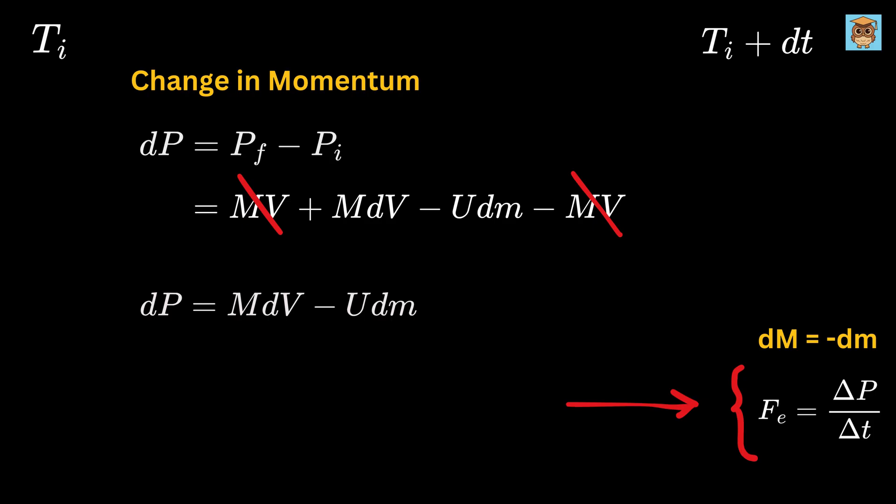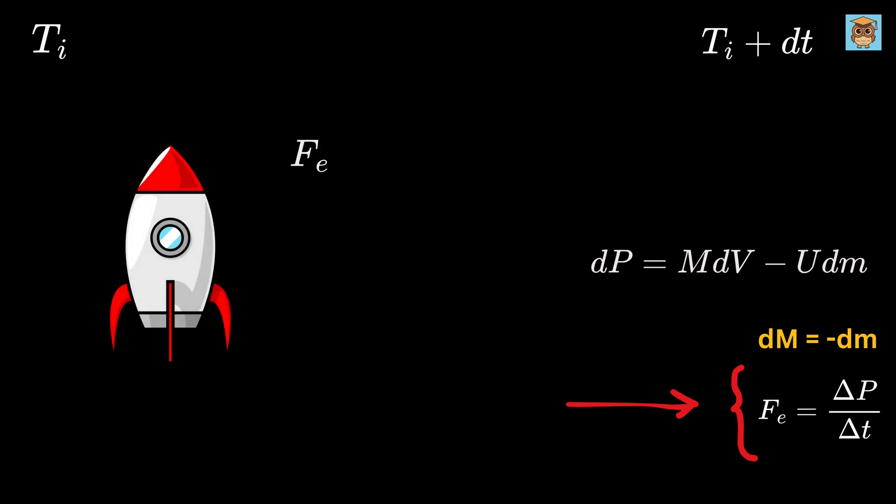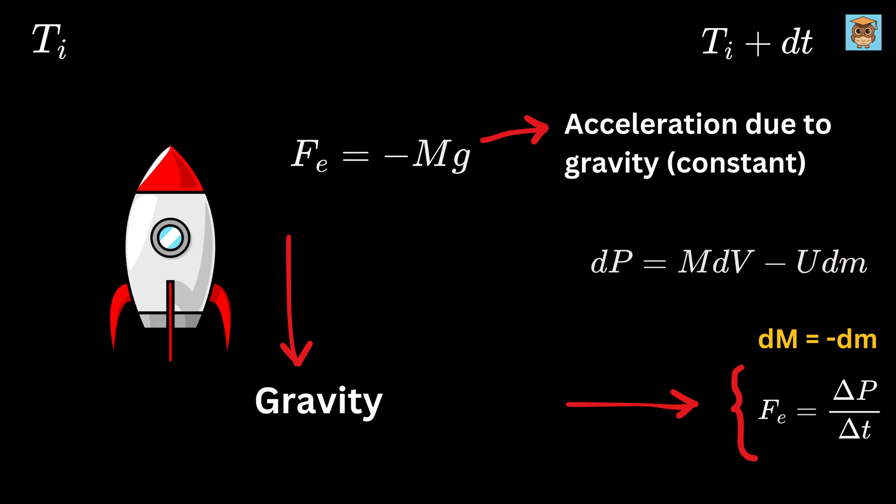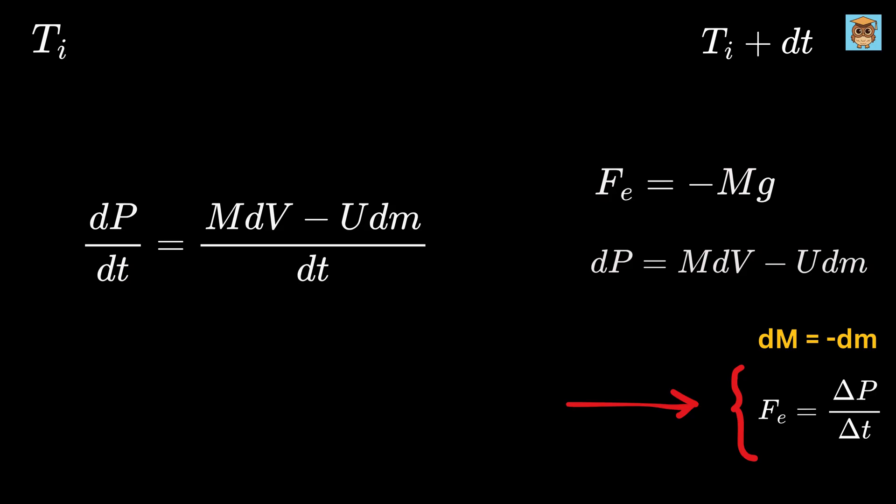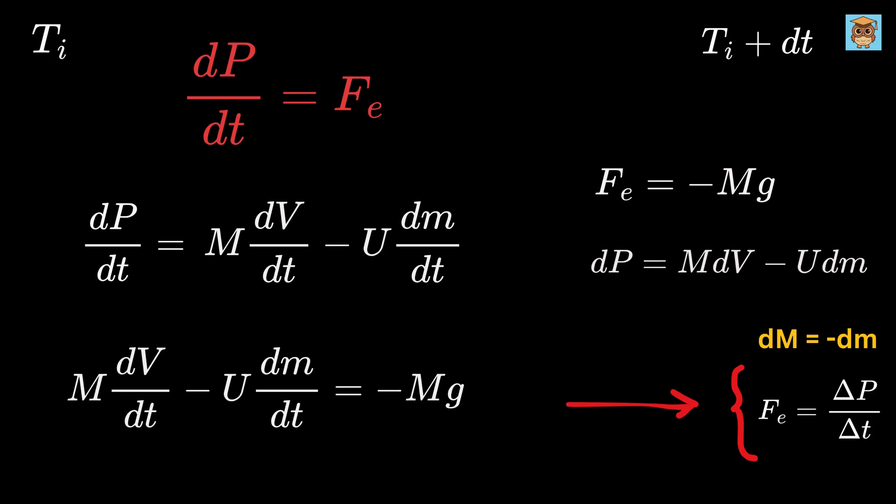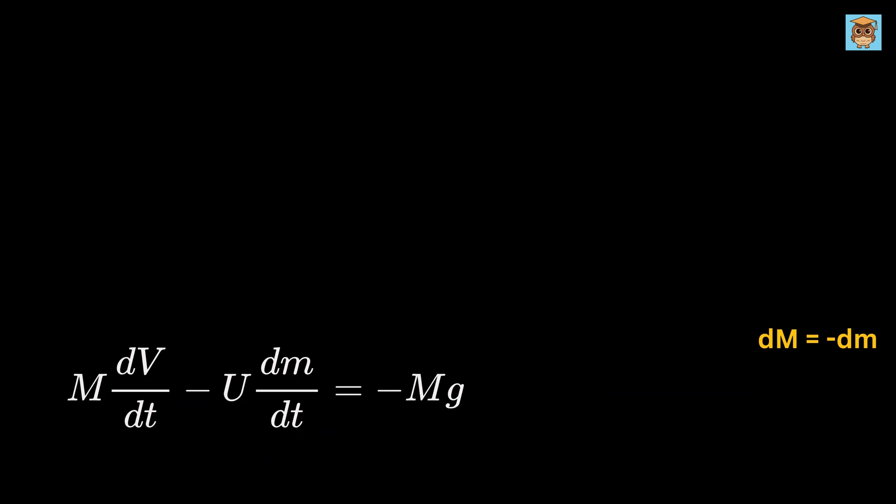Now we have Newton's second law where Fe, the external force applied on the object, equals change in momentum dp divided by change in time dt. What's the external force acting on this rocket? Yeah right, it's gravity. So Fe will simply be -Mg since gravity is pulling down and upward direction is positive. Now dp/dt equals M dv/dt - u dm/dt. Let us equate Fe to dp/dt and you know what, this u times dm/dt is actually the thrust force applied on the rocket.